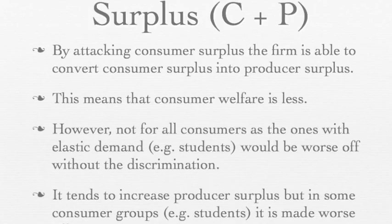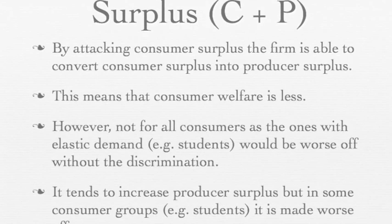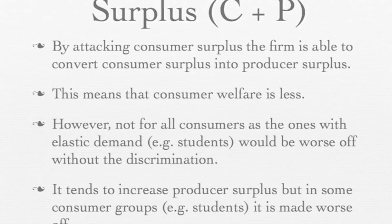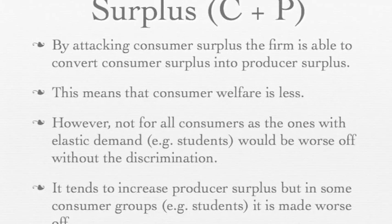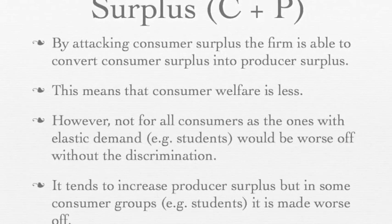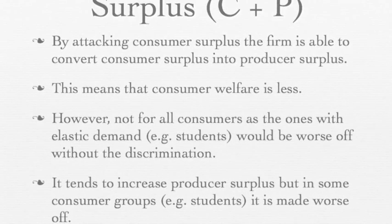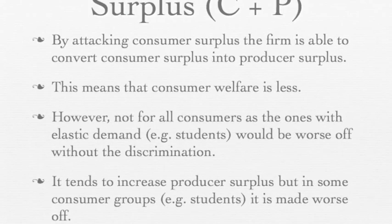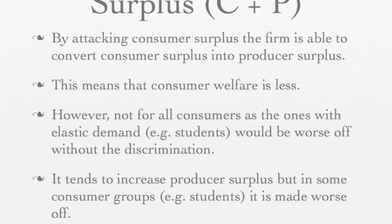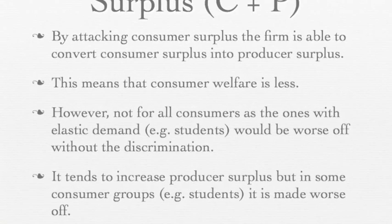Regarding consumer and producer surplus: by targeting consumer surplus, the firm is able to convert it into producer surplus, meaning consumer welfare is reduced — however, not for all consumers. Those with elastic demand, such as students being charged a lower price, are probably better off with the discrimination than without. It also tends to increase producer surplus overall, though not for all consumer groups — for students, there will be less producer surplus generated.